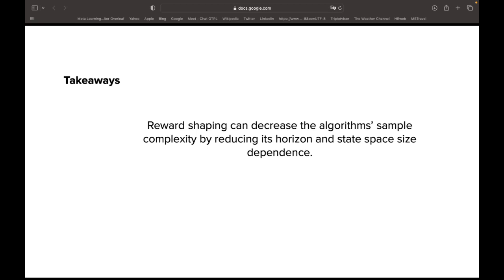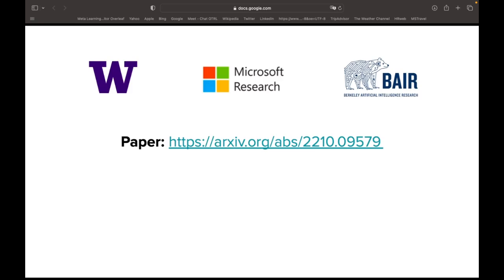In summary, we hope this presentation can convince the audience that reward shaping can decrease the algorithm sample complexity by reducing its horizon and state space size dependence. You can all find the paper in this archive link and we hope to see you at our poster. Thank you.